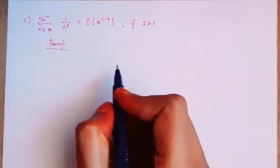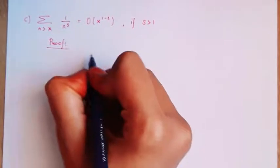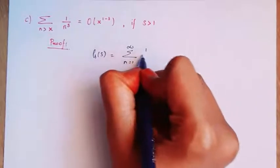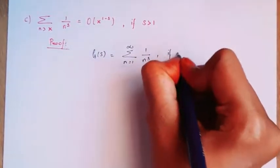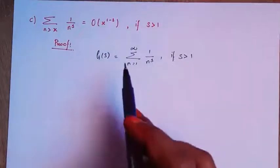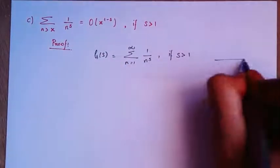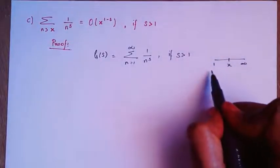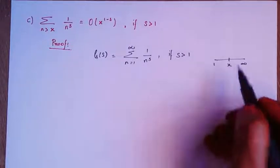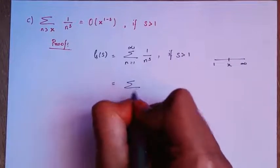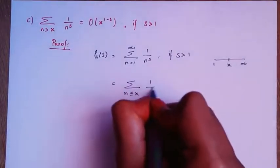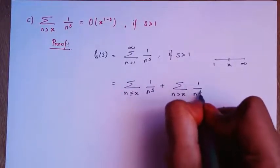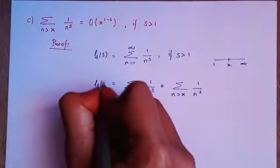We know that for s greater than 1, zeta of s equals the sum over n from 1 to infinity of 1 over n^s. Now I am going to split this interval into two parts — from 1 to infinity — splitting at x. So I can write this as the sum from 1 to x plus the sum from x to infinity, giving us the sum over n ≤ x of 1/n^s plus the sum over n > x of 1/n^s. This equals zeta of s.